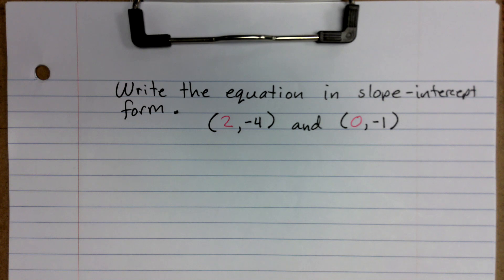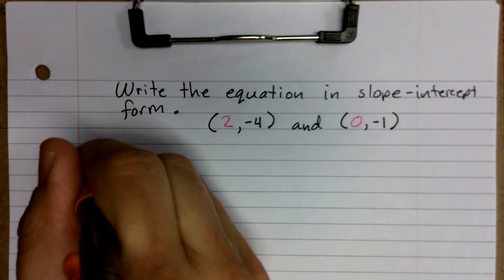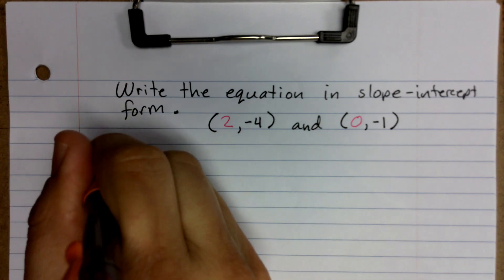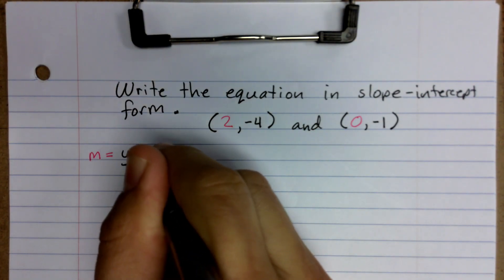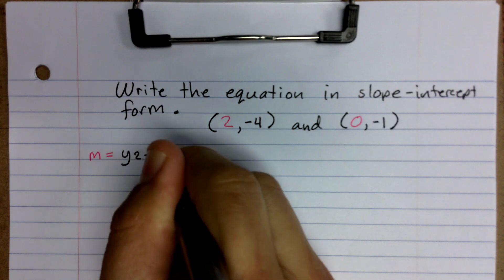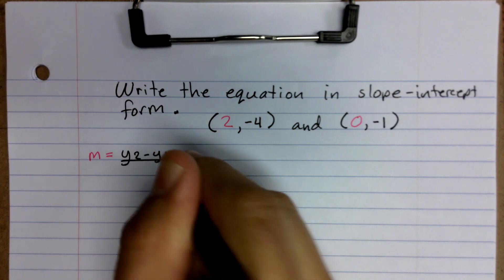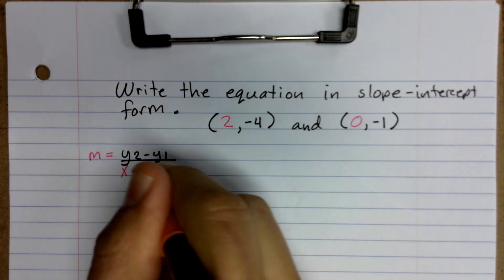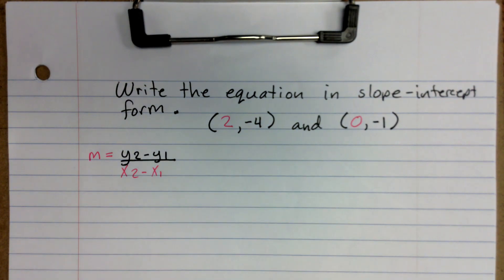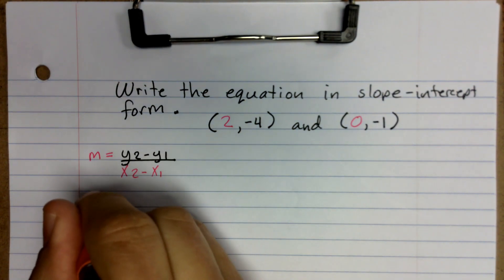Let me go ahead and show you the different formulas that we'll need in order to solve this. The first one is the slope formula. I'm going to put m equals, and our slope formula is y2 minus y1 over x2 minus x1. We'll be using that first to find the slope.